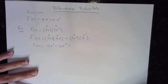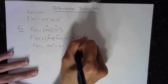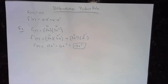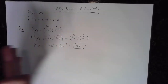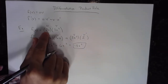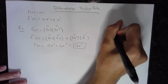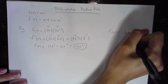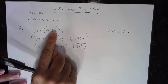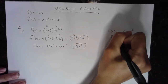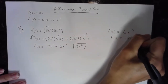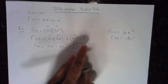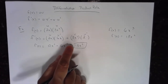Then we simplify: 2x times 6x is 12x squared, plus 3x squared times 2 is 6x squared, which combines to 18x squared. Like I said, I don't technically need the product rule here — if I multiply out 2x times 3x squared I get 6x cubed, and its derivative is simply 18x squared. Same answer, just faster. But we're practicing the product rule.